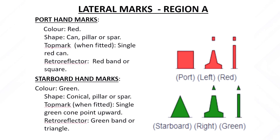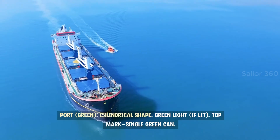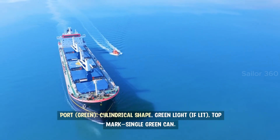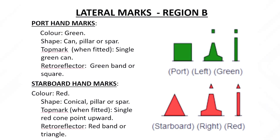Region B — port: green, cylindrical shape, green light if lit, top mark single green can. Starboard: red, conical shape, red light if lit, top mark single red cone pointing up.